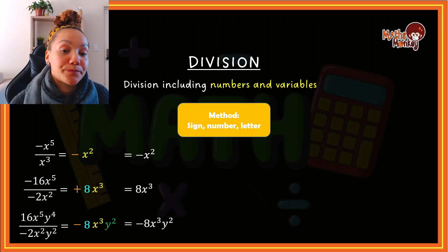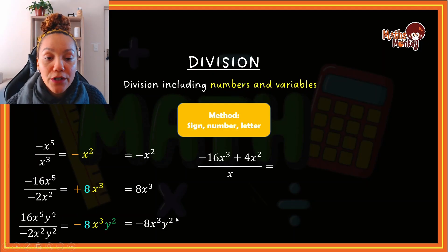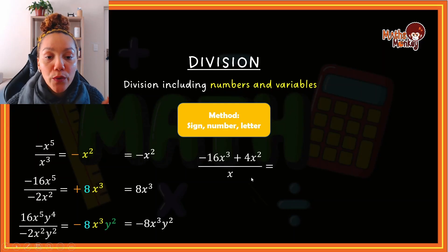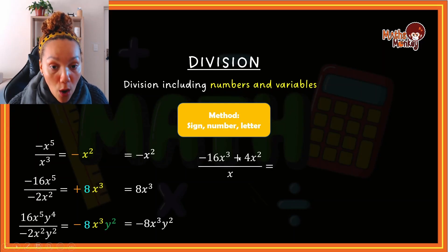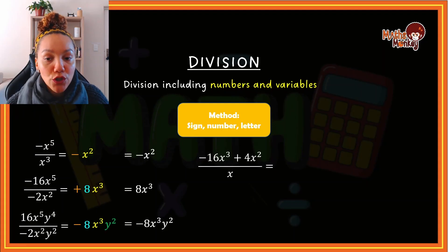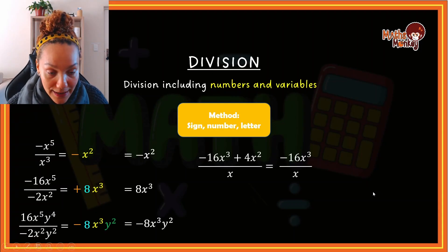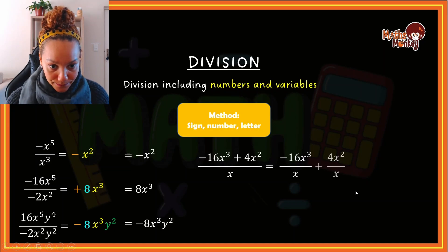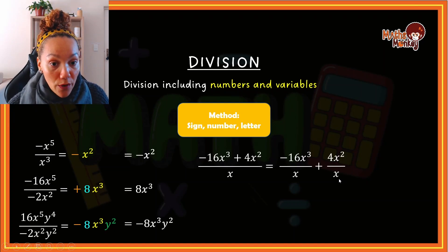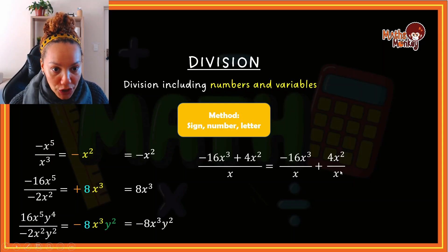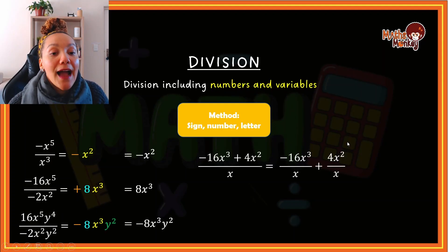Let's try another one. Notice how this question is different — at the top I have more than one term, and I'm dividing more than one term by just one variable. When you have a plus or minus, these are two separate terms. The way to do this is to break it up into separate questions: take negative 16x to the 3 divided by x first, and then add that answer to 4x squared divided by x. We are splitting the question.